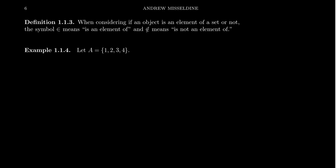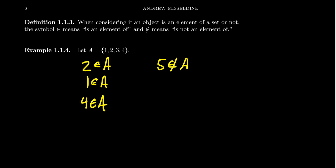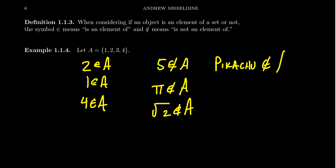Consider set A containing the four integers 1, 2, 3, and 4. It is true that 2 belongs to set A — we say 2 is in A, 2 is a member of A. Likewise, 1 and 4 belong to the set. But we can also say that 5 does not belong to A, neither does pi, the square root of 2, or Pikachu. Anything not listed here does not belong to the set. Of course, one might ask why we'd consider whether Pikachu belongs — this leads to the idea of a universal set, which we'll cover in the next video.